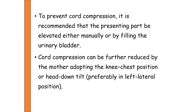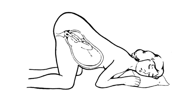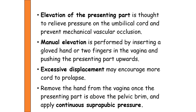To prevent compression of the cord, the presenting part can be manually elevated using the fingers, or the urinary bladder can be filled with saline. Cord compression can also be reduced by placing the mother in the knee-chest position — in this position the baby's presenting part moves toward the uterine fundus, displacing it away from the cord and relieving pressure.